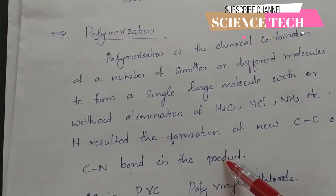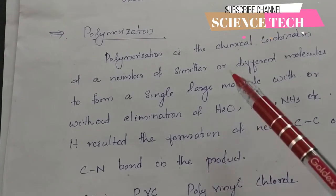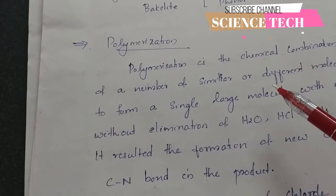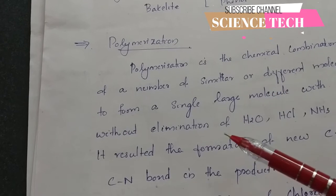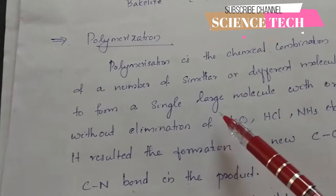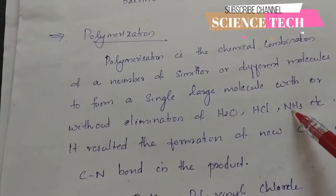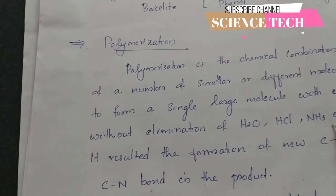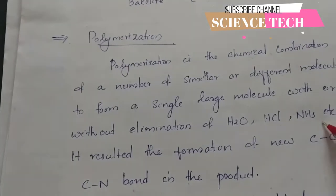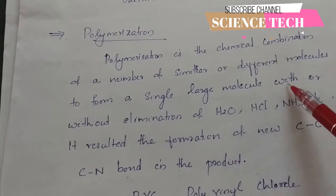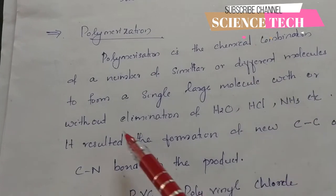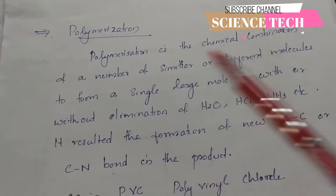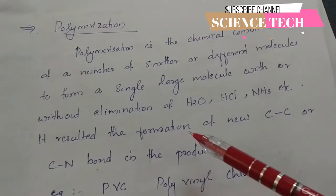Different monomers may include different functional groups such as amino, alcohol, acid groups, etc. The combination of monomers with or without the elimination of water, HCl, or ammonia is called polymerization. This applies both to homopolymers and copolymers.